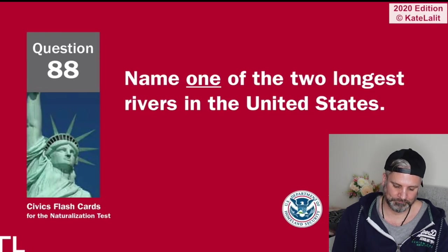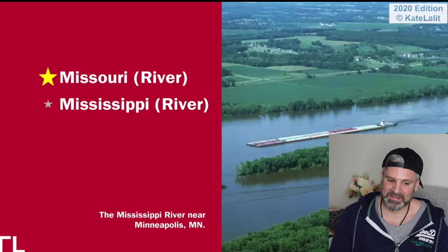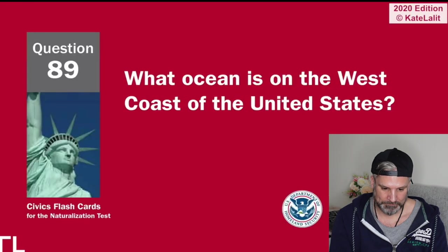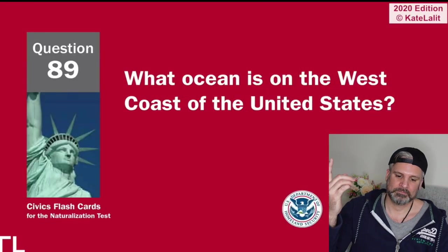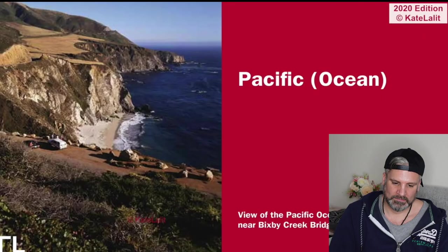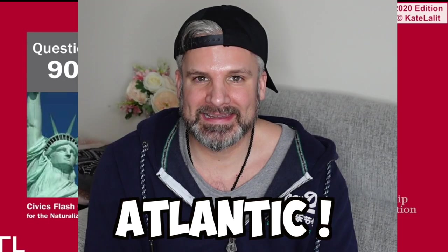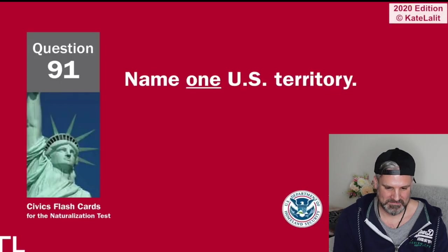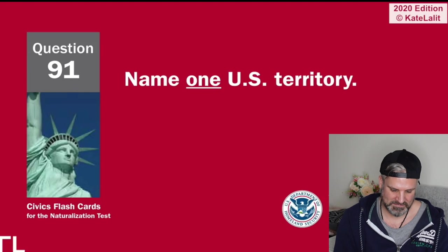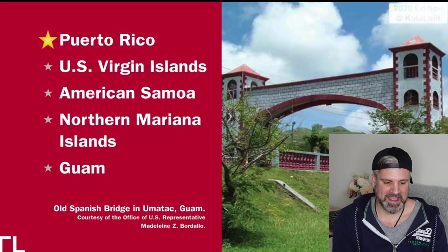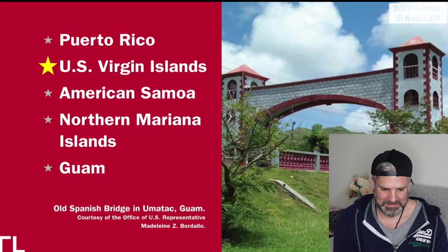Name one of the two longest rivers in the United States. Mississippi River, Missouri River. What ocean is on the west coast of the United States? Pacific Ocean — and it's the Atlantic over the other side. What ocean is on the east coast? Atlantic Ocean. Name one US territory — Puerto Rico. Yes!